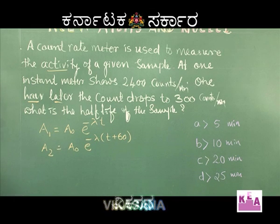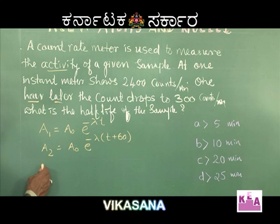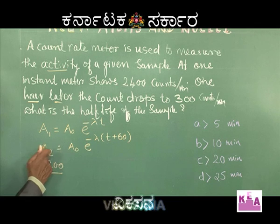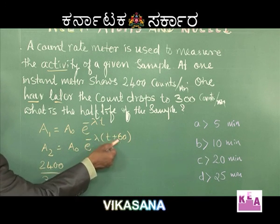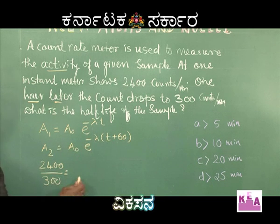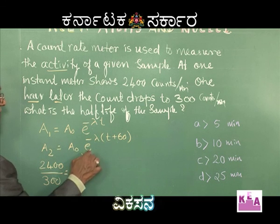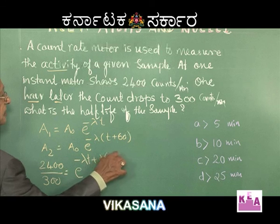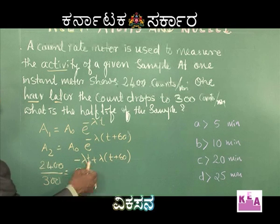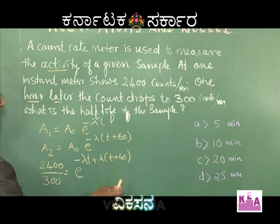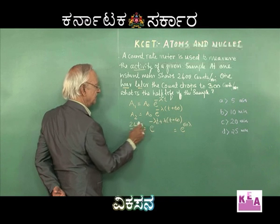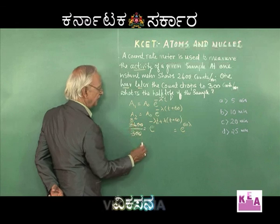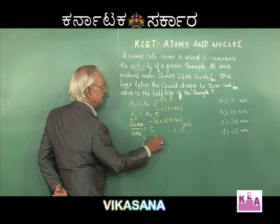We know A₁ = 2400 and A₂ = 300. Dividing A₁/A₂ gives e^(−λt) divided by e^(−λ(t+60)). Bringing the denominator to the numerator: e^(−λt + λ(t+60)) = e^(60λ). The λt terms cancel, leaving e^(60λ). On the left side, 2400/300 = 8. So e^(60λ) = 8 = 2³.